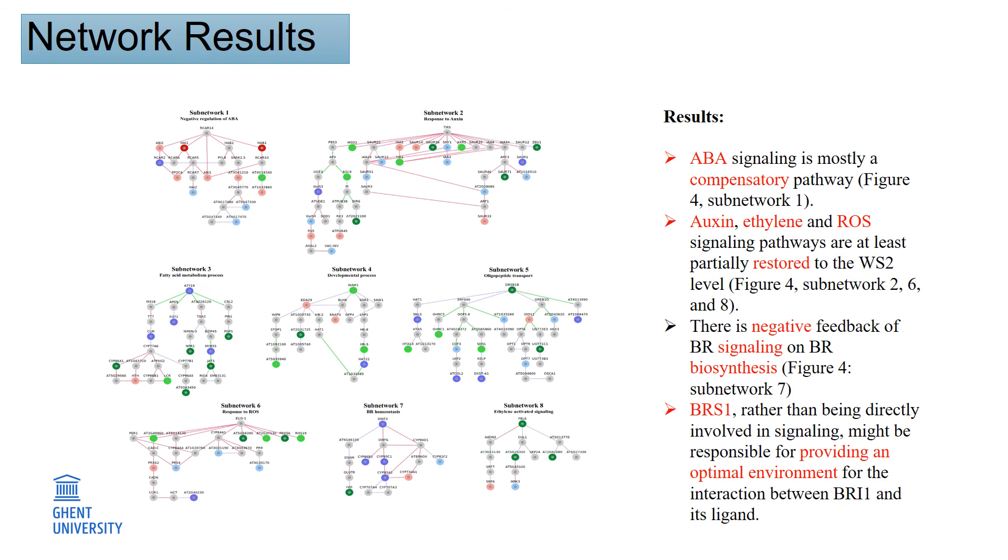And here is the subnetwork result which we identified eight subnetworks describing the restored, non-restored, and compensatory pathways. And the result was remarkable. For example, we identified ABA signaling as compensatory pathways.